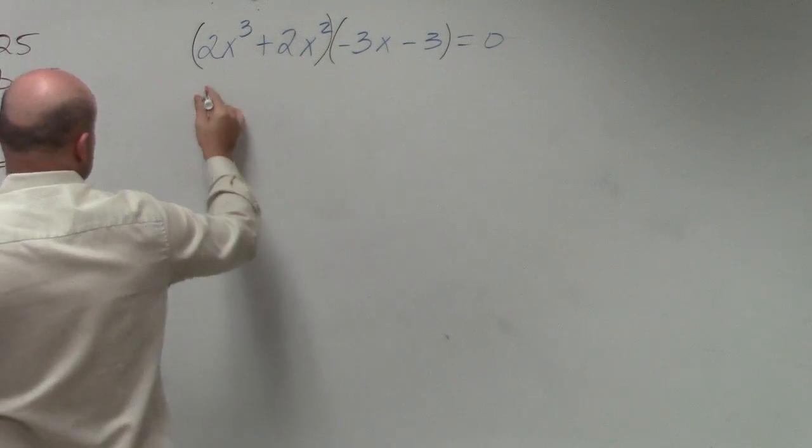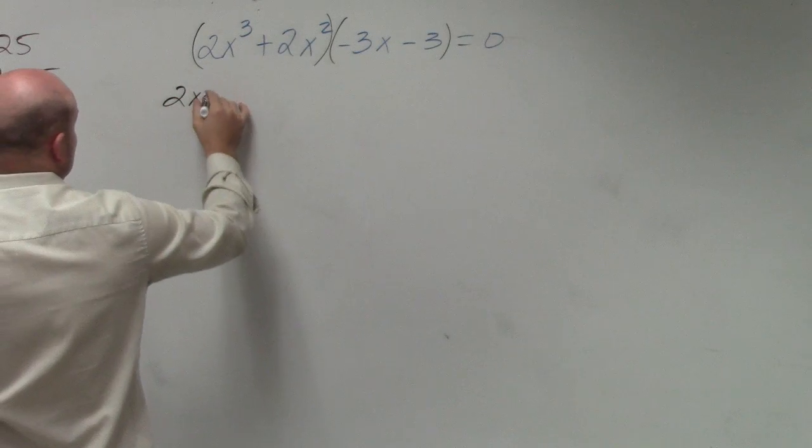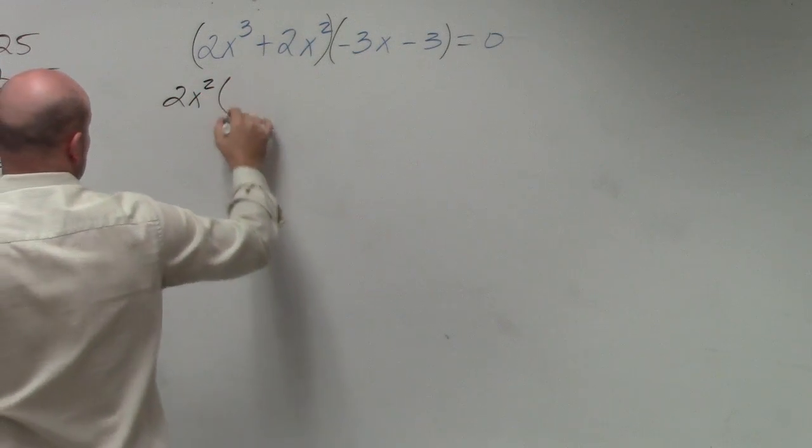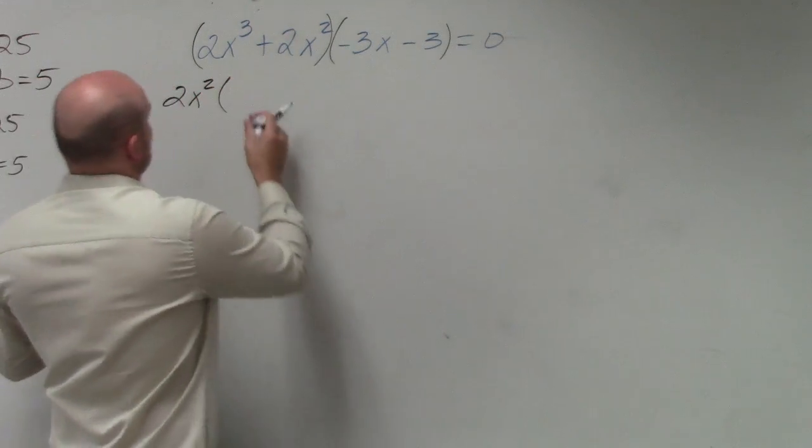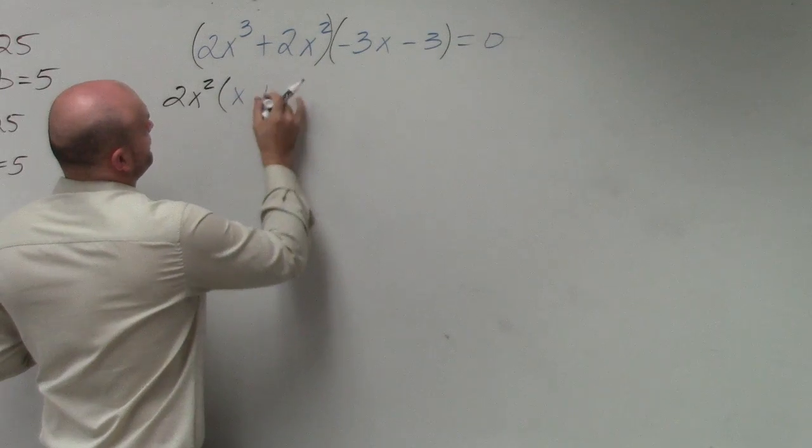So the GCF out of this first set is 2x squared. When I factor out 2x squared, I'm left with x plus 1.